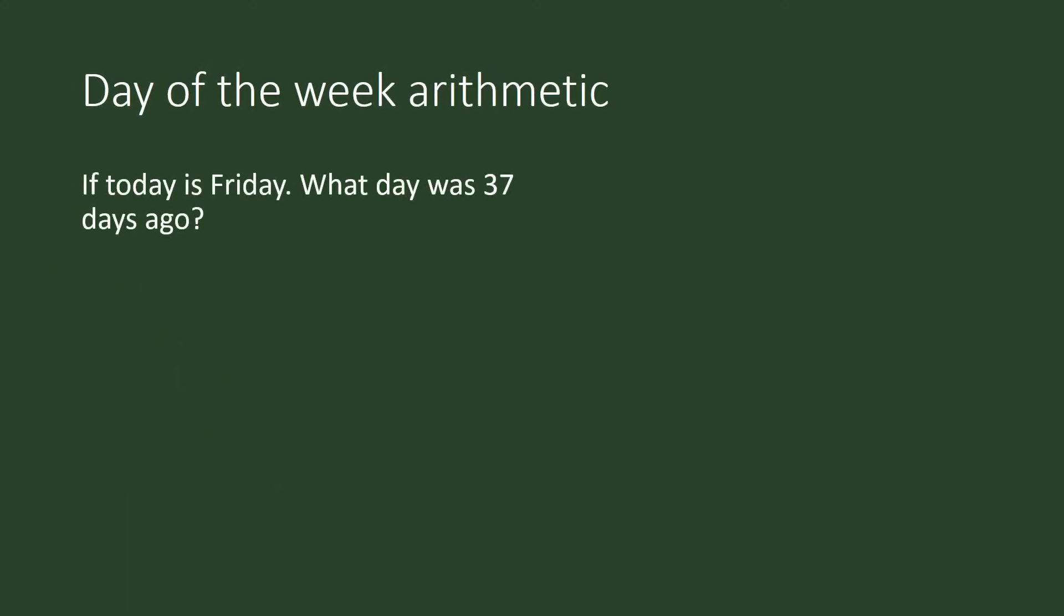If today is Friday, what day was 37 days ago? So this is what we do. Again, we assign 5 to Friday. And then we subtract. So I'm using a different notation here. So 5 minus 37. What is that congruent to modulo 7? So 5 minus 37 is negative 32. What is that congruent to under modulo 7 arithmetic? So what we do is you do ordinary. Let us ignore the sign first. So 32 divided by 7, this is equal to 4.